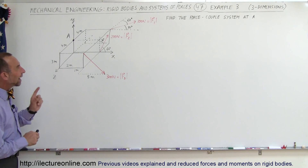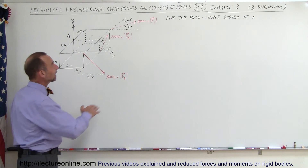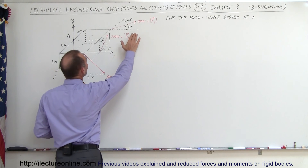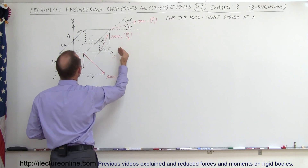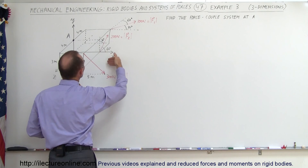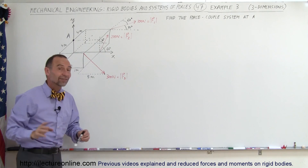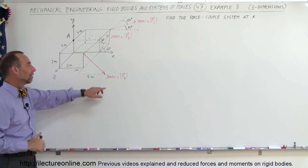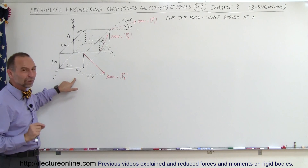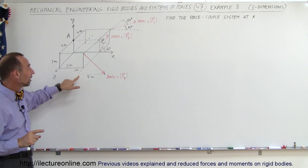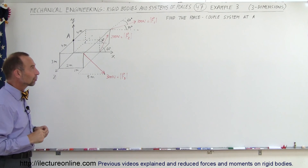Let's find the x, y, and z components of each of the three forces. Notice that F1 only exists in the x-z plane, F2 only exists in the x-y plane, and F3 exists in the x, y, and z plane, so F3 will have three components. We'll also have to find the direction cosines in order to find the x, y, and z components of F3.